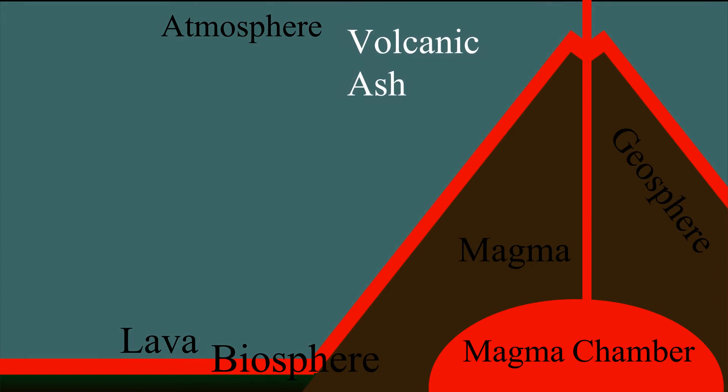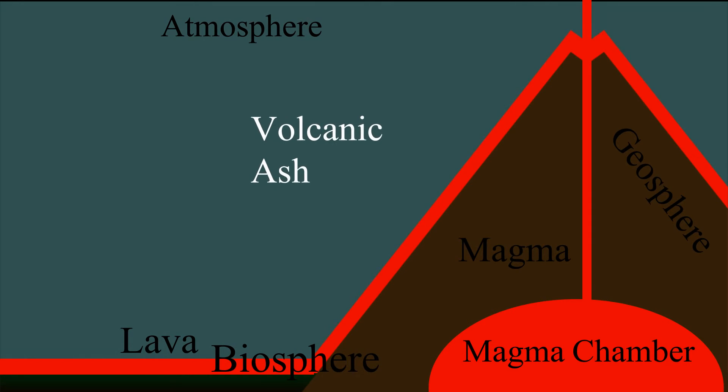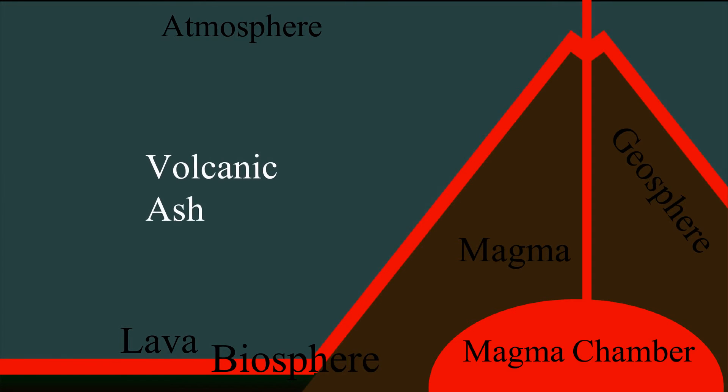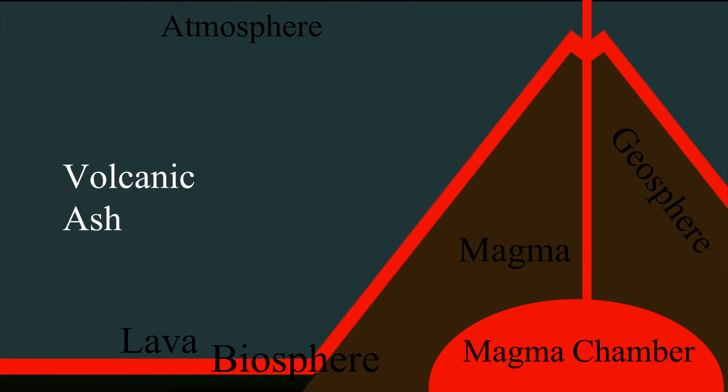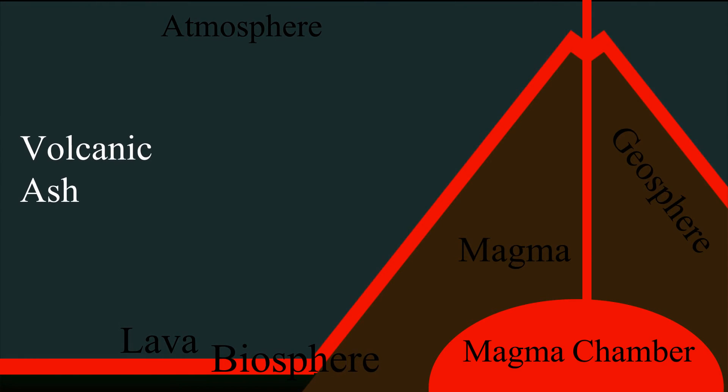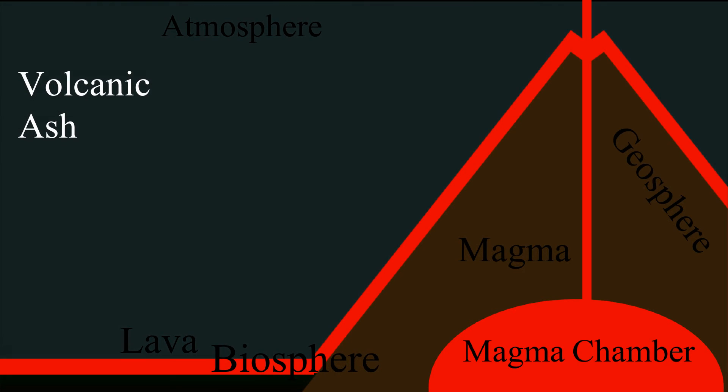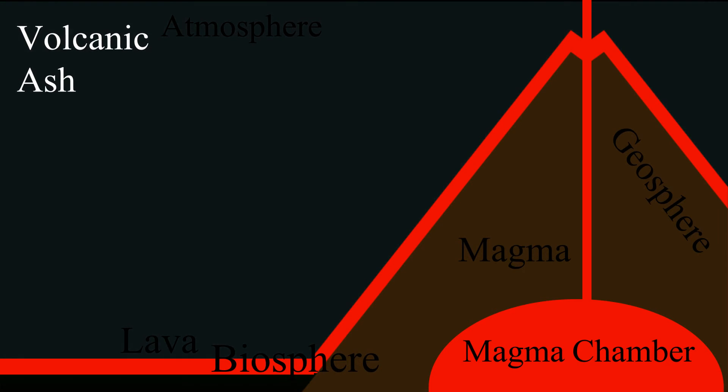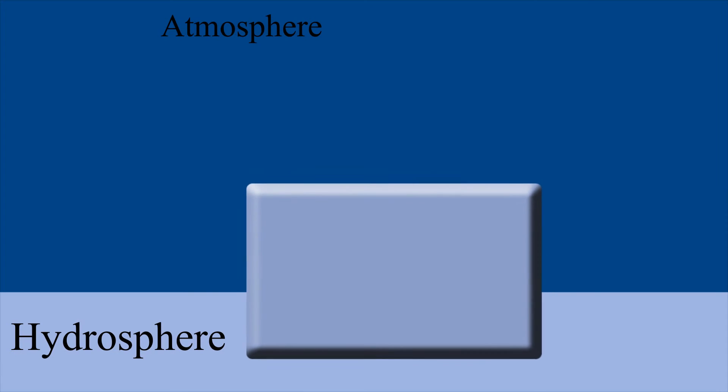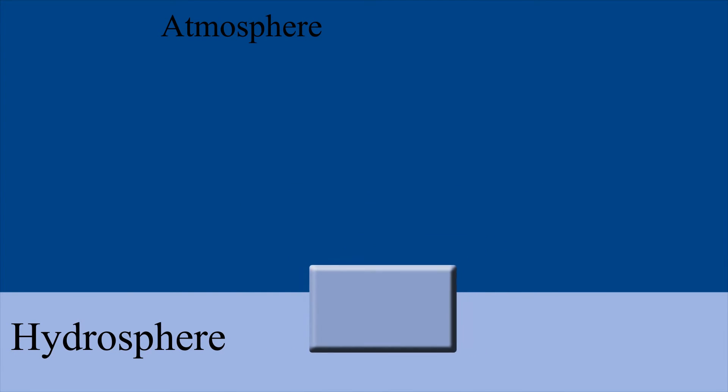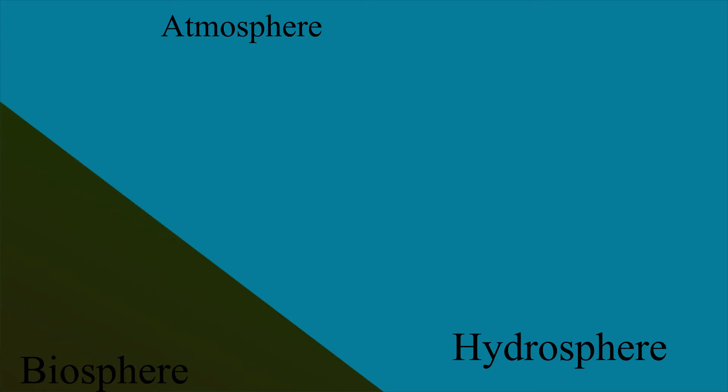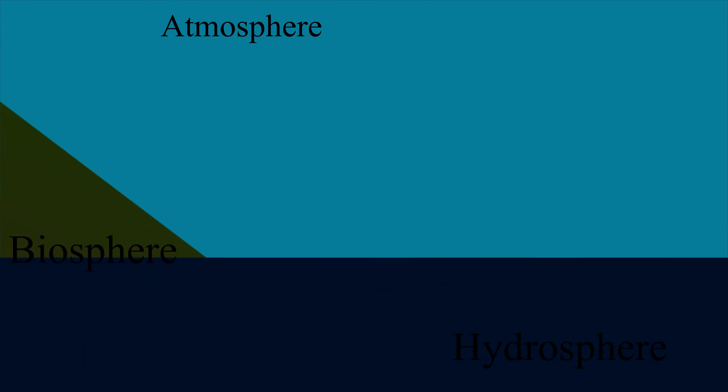Volcanic ash carries gases through the atmosphere that are poisonous to all living creatures. In addition to this, some of the gases released from the volcano increase global warming. Global warming in the atmosphere has a damaging effect on the hydrosphere, such as making the ice caps melt. This causes the hydrosphere to increase and reduce the size of the biosphere.